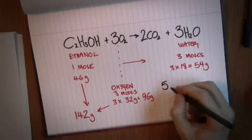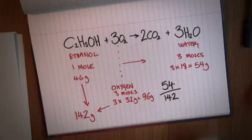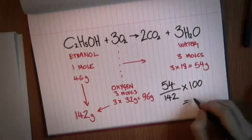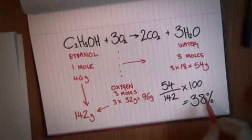So 54 grams of product, water, divided by 142 grams of starting materials times 100 per percentage, 38%. That's your atom economy.